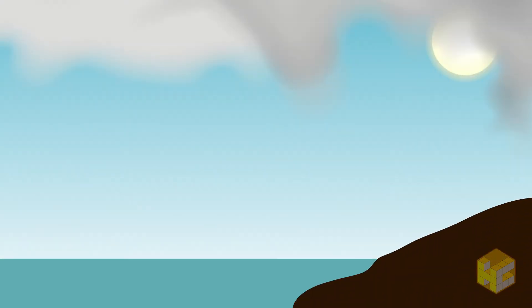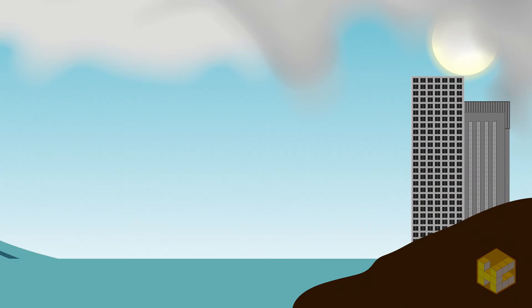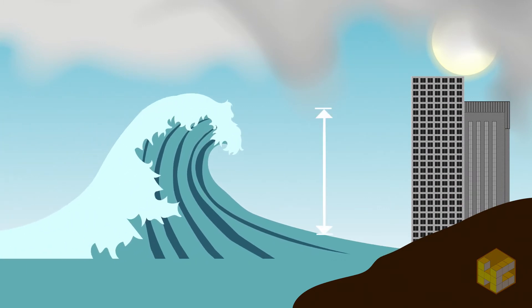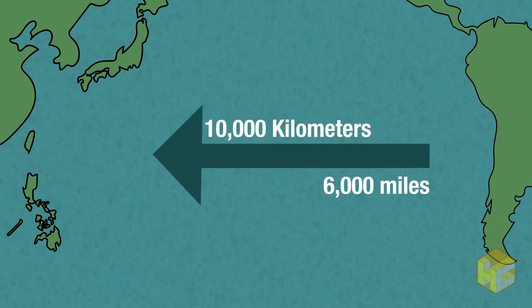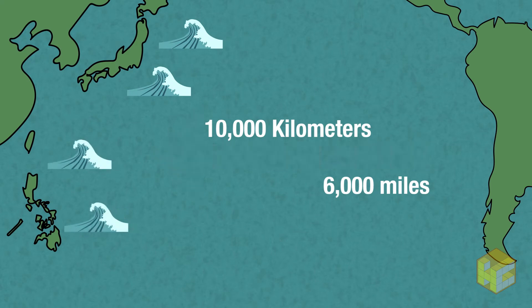Shortly after, tsunamis hit coastlines all around the Pacific Ocean. In Chile, the waves were 25 meters tall. 10,000 kilometers across the ocean, waves as high as 10.7 meters hit Japan and the Philippines.